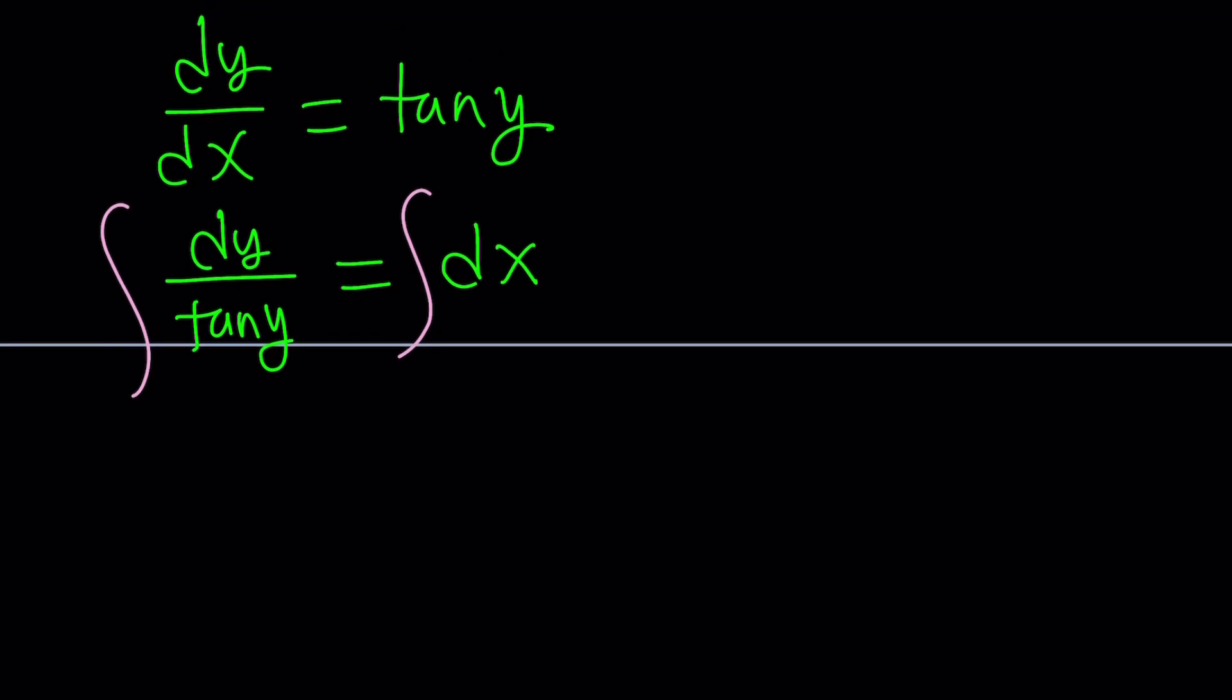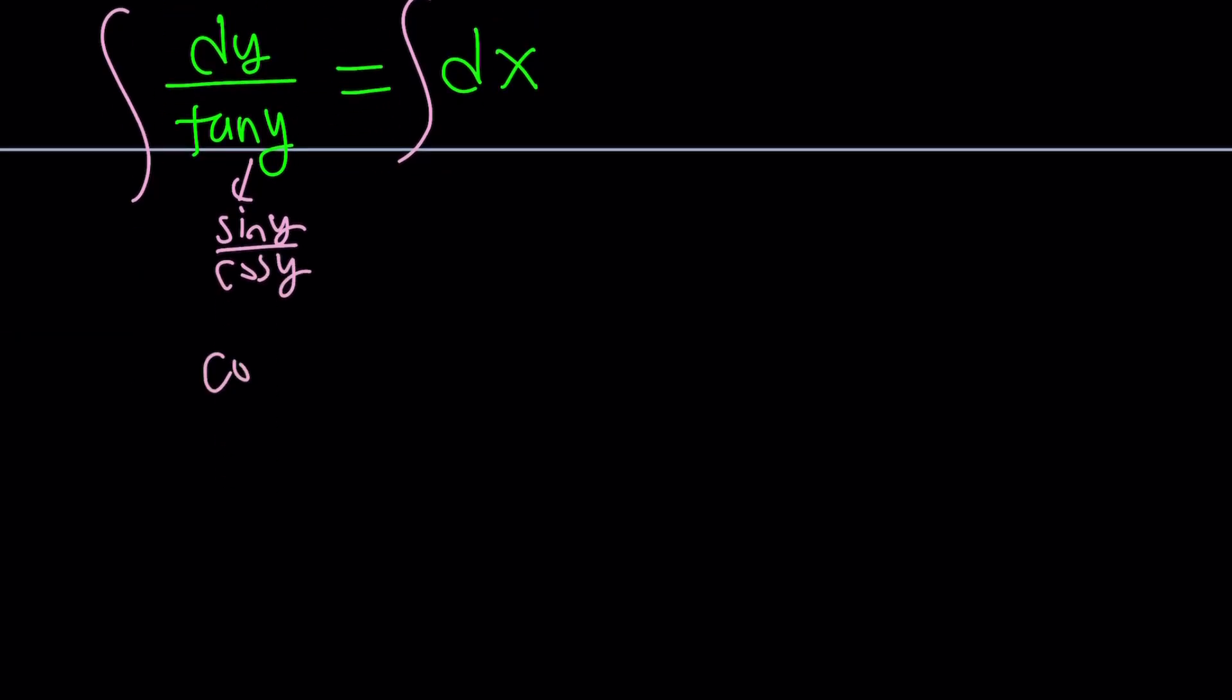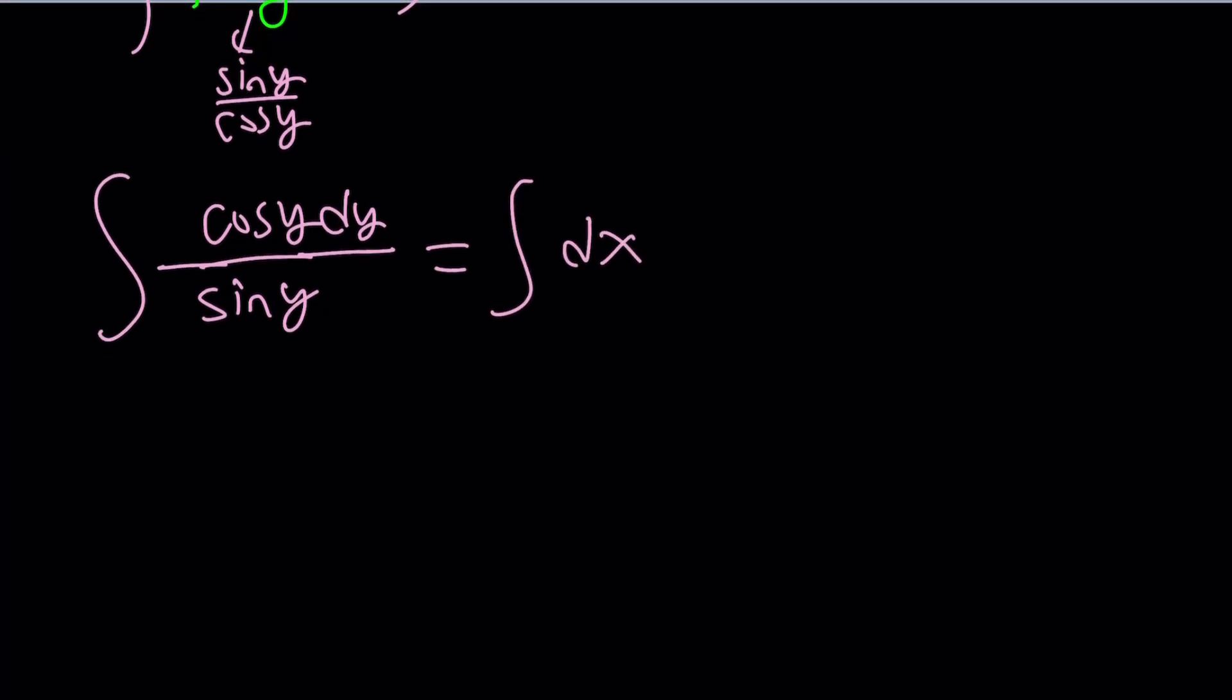So to integrate this, first of all, write tangent as sine over cosine. And then you're going to flip it, so it's going to look like cosine y over sine y, and maybe put the dy here as well. So that's going to be our cotangent equals dx. You know the right-hand side, but we'll write it at the end. Now, how do you integrate something like this?